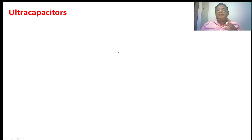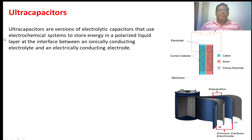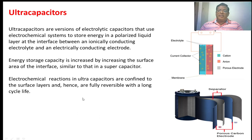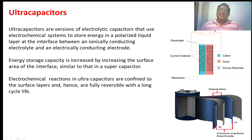Ultracapacitors are a version of electrolytic capacitors that use an electrochemical system to store energy in a polarized liquid layer at the interface between the ionically conducting electrolyte and electrically conducting electrode. The energy storage capacity is increased by increasing the surface area contact of the conductor as well as the ionized electrolyte. These two are the separators and these two are the porous carbon electrodes, so that the surface area is increased, giving them more current energy. Electrochemical reactions in ultracapacitors are confined to the surface layer only, hence are fully reversible with a long cycle life. There is some chemical reaction that occurs confined only to the surface area where electrode and dielectric material interface, but there is no chemical reaction in the case of a supercapacitor.